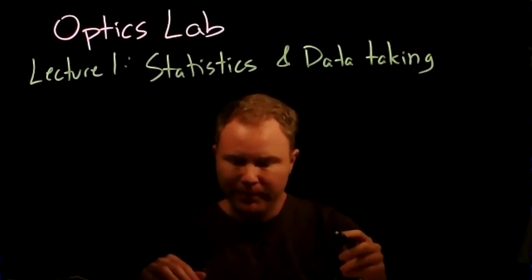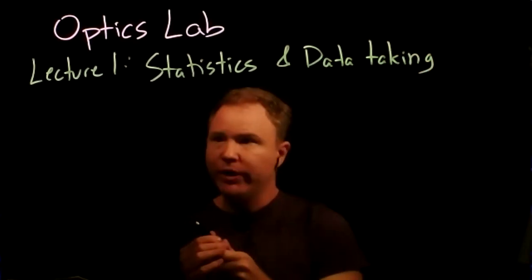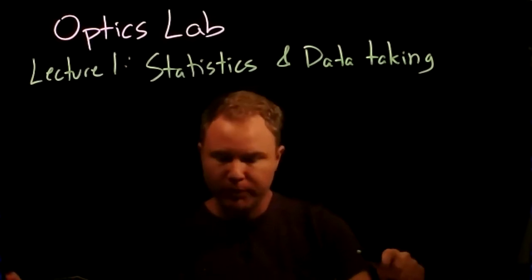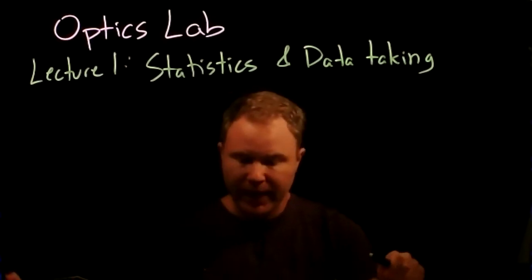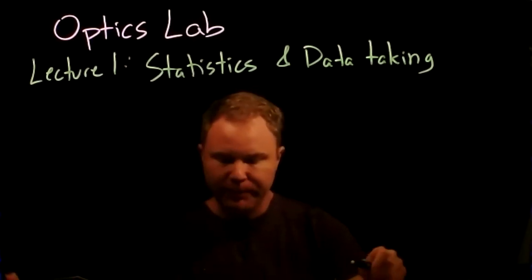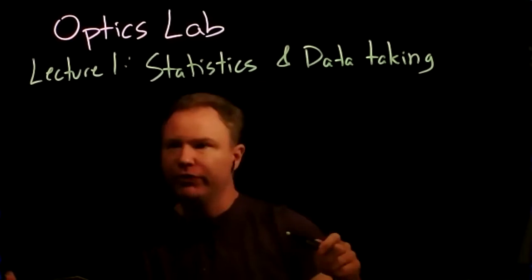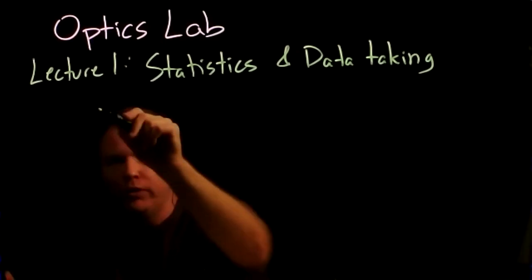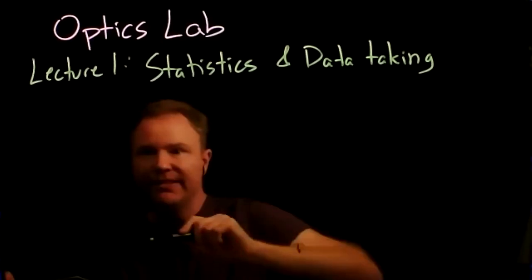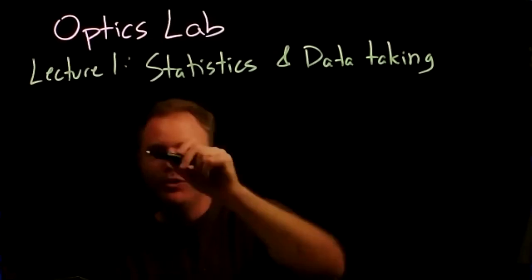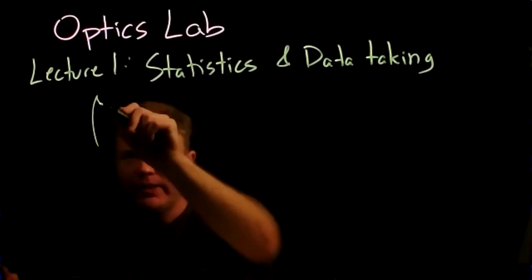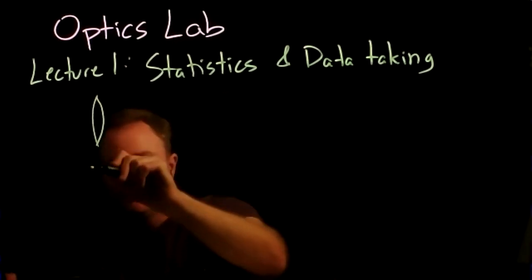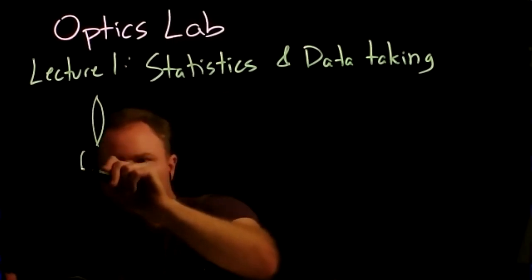I'll start with an example — one of the experiments you can choose to perform. I will draw the very simplest version of this experiment. The experiment is to explore how lenses and how imaging work. If you have a lens, there's some focal distance associated with it, say 10 centimeters.